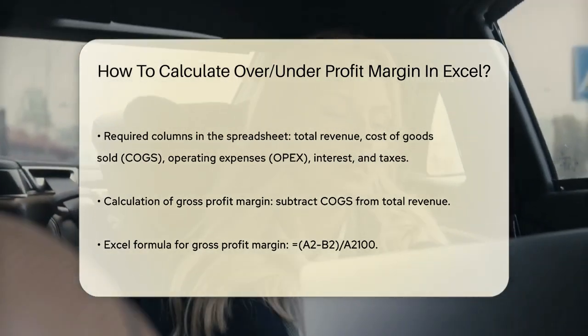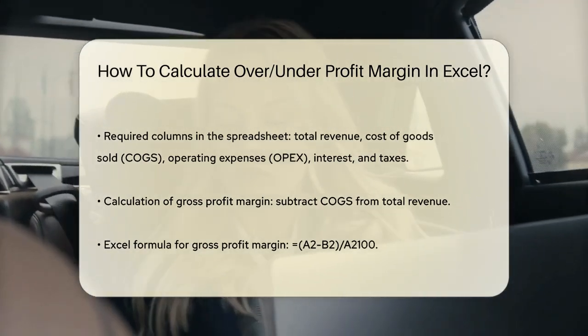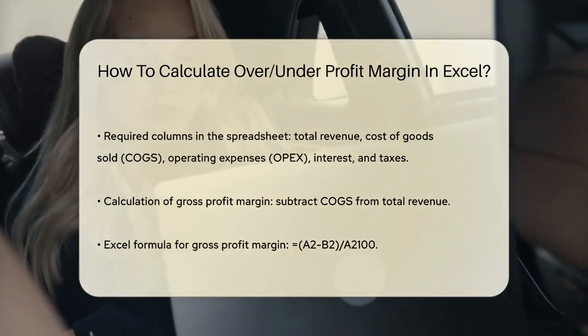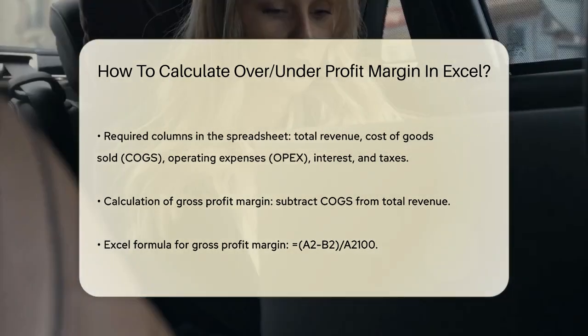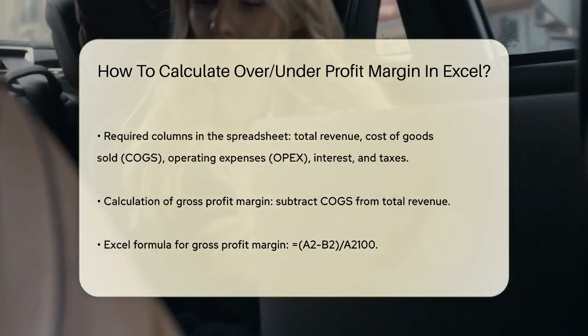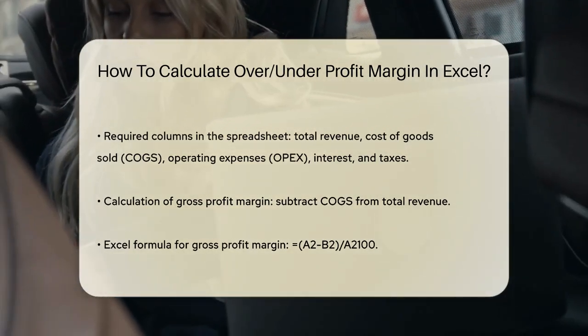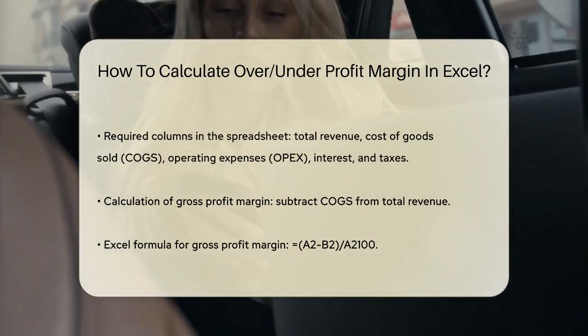In Excel, this formula would look like: =(A2-B2)/A2*100, where A2 is the total revenue and B2 is the COGS.